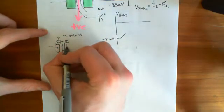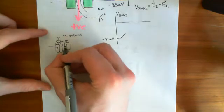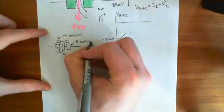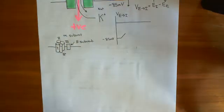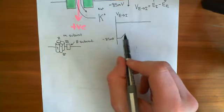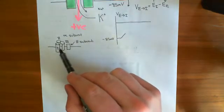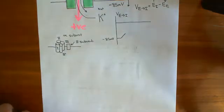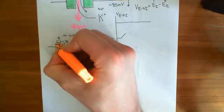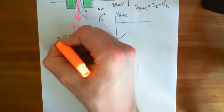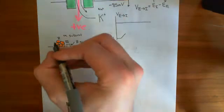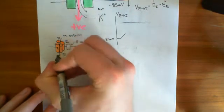Voltage-gated sodium channels can also have a beta subunit, which is an auxiliary subunit — not necessary for the channel to be functional, but it will modulate the function of the alpha subunit. These voltage-gated sodium channels are closed when the membrane electrical potential difference is too negative. However, when you depolarize the electrical potential difference across the membrane, these channels can open, allowing sodium ions to come through into the cell cytoplasm.